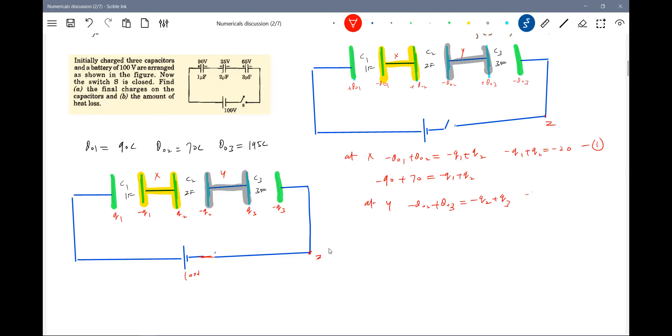This should be equal to minus Q2 plus Q3. Q naught 195 if you remove 125. At Z, Z should be equal to Q1 minus Q3 should be equal to Q naught 1 minus Q naught 3. Q naught 1 minus Q naught 3. So this should be 105.